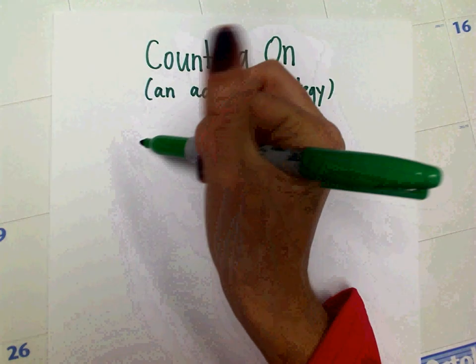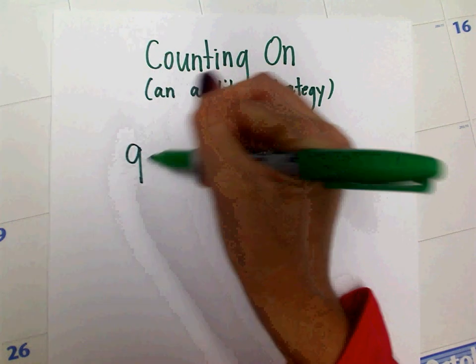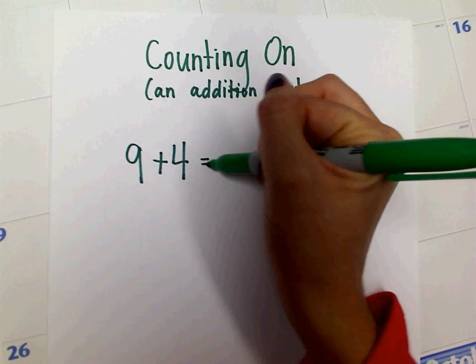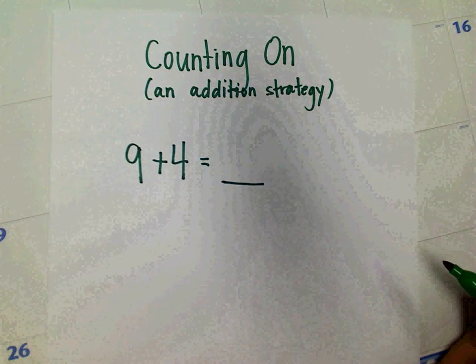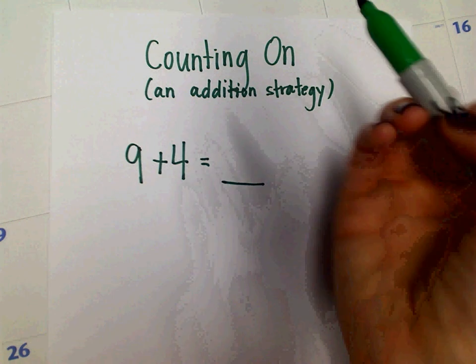This strategy, in the equation 9 plus 4, you would start with the biggest number. I see that the biggest number is 9.